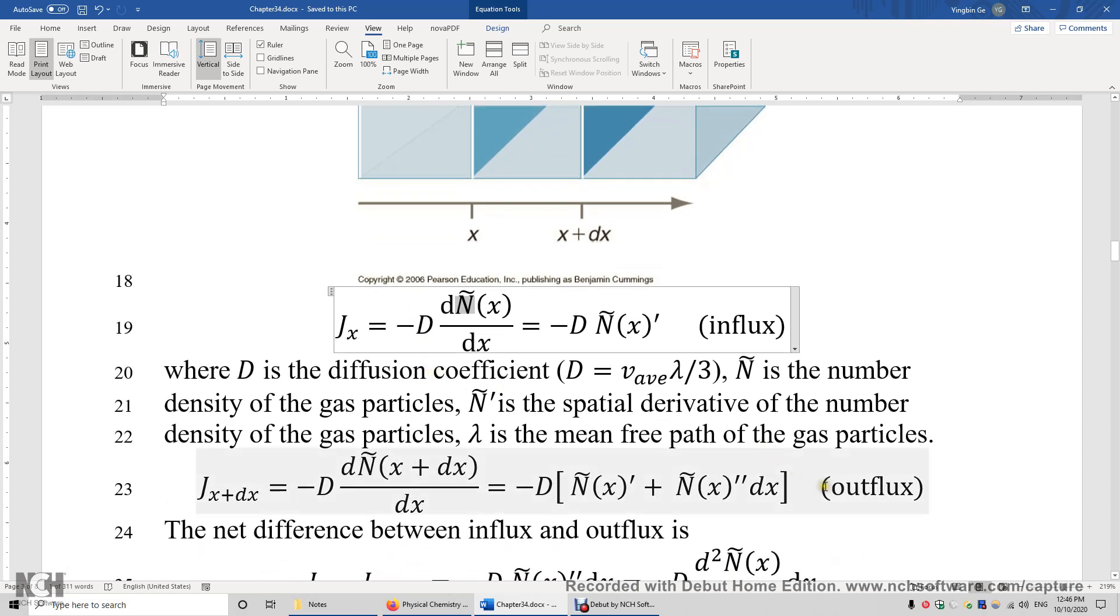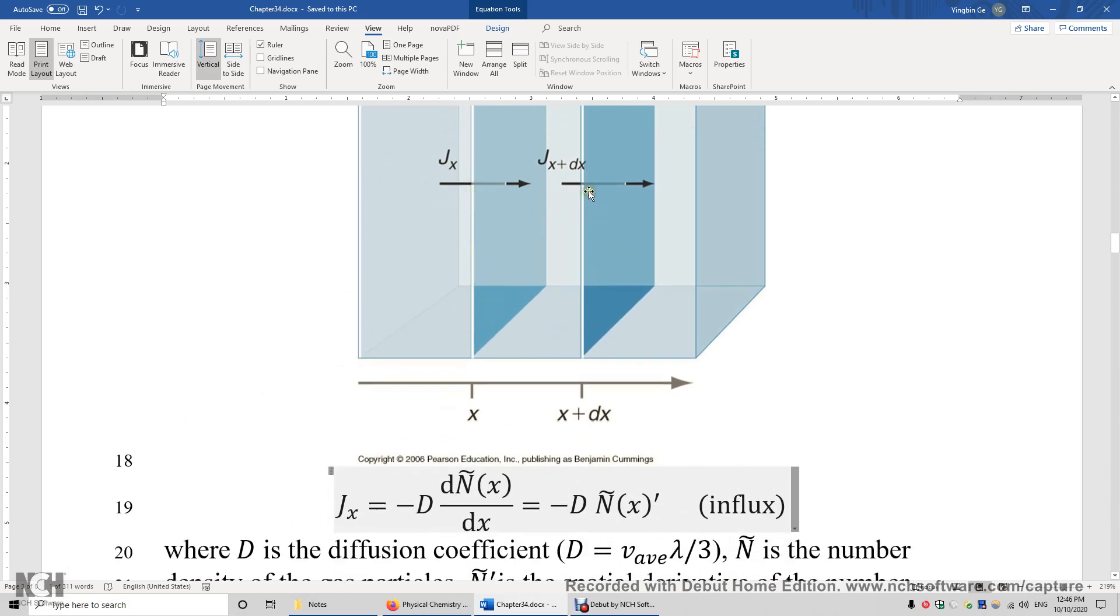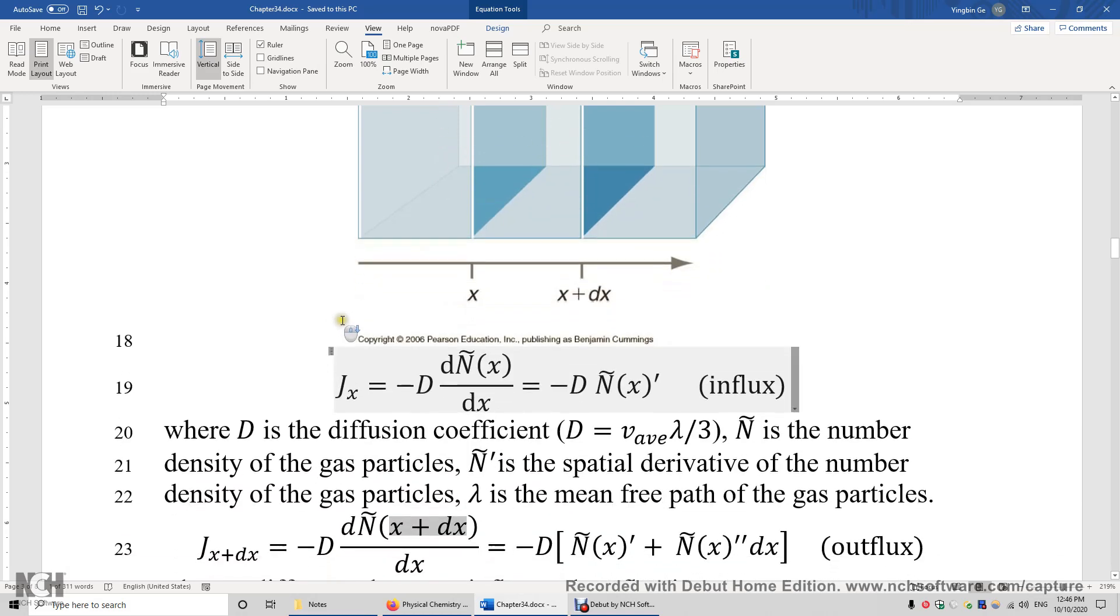We also have an equation for outflux at a different position. The position is x plus dx. So again, the influx takes place here, the outflux takes place here. So at this position and this position, we have different spatial gradients of the density of the particles.